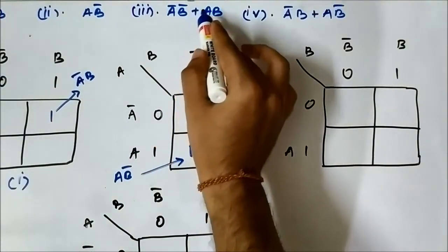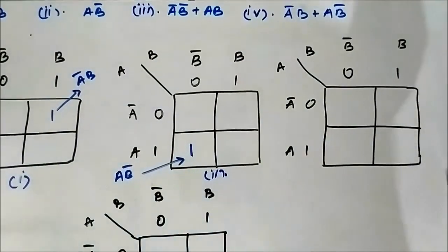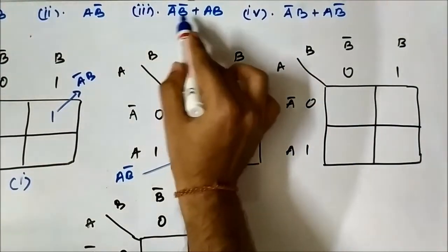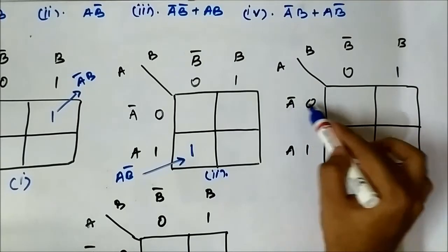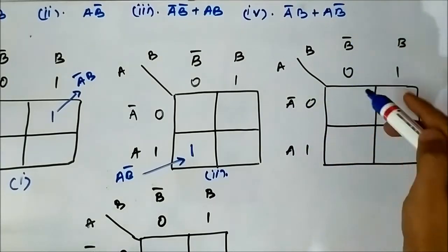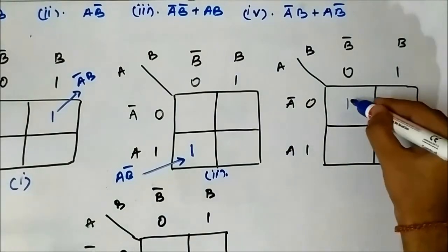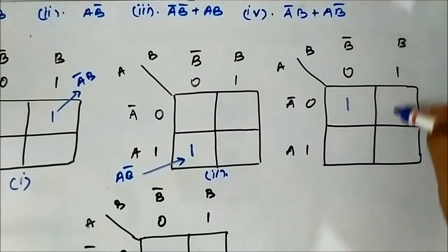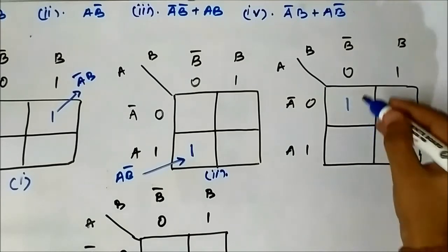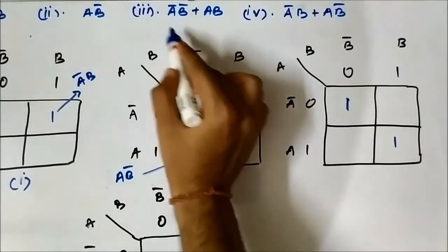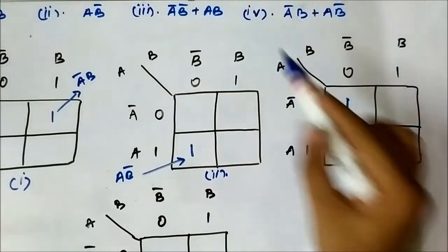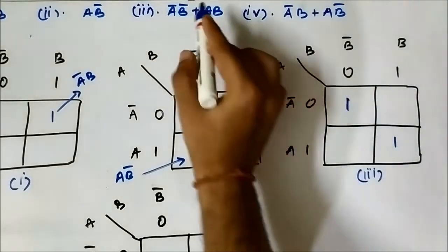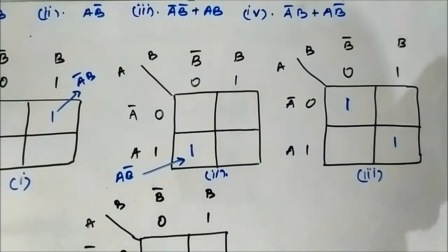The third expression is A bar B bar plus AB. It consists of two boolean terms, so two cells will be marked. For A bar B bar: horizontal component A bar, vertical component B bar — that cell is marked as 1. For AB: horizontal component A, vertical component B — that cell is also marked as 1. Since there are two boolean terms, two cells are marked.